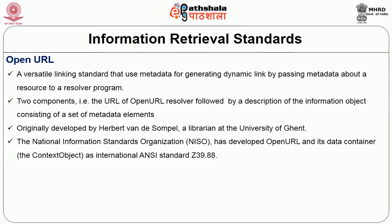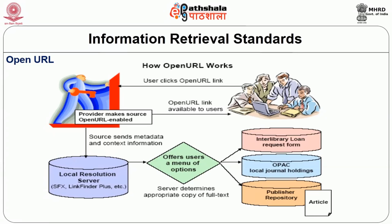Looking at how Open URL works: a user clicks on an Open URL link made available by a provider (the source). The source sends metadata and context information to a local resolution server, which resolves it and offers the user a menu of options — such as a published article — and that resource can be resolved and delivered.